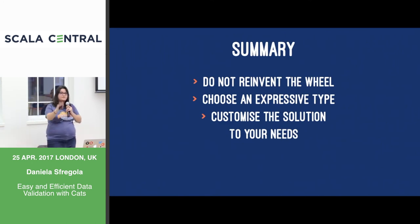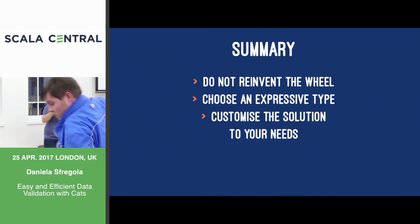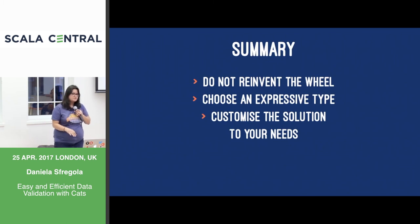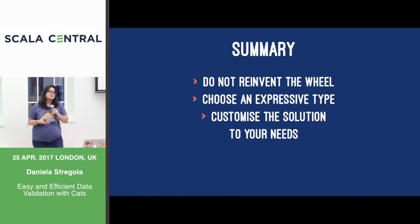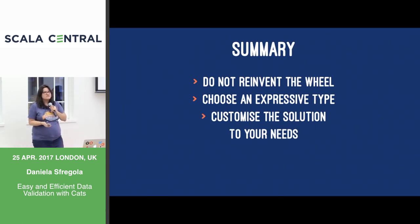The summary: don't reinvent the wheel. If you have a problem, have a look around — there is probably someone else who has already fixed it. Try to spend some time reasoning about your types, because choosing the right type will probably solve half the battle. And obviously, be aware of your teammates: try to choose a solution that works for everybody. If your team is comfortable with symbols, great. If not, you can just hide them behind some functions.